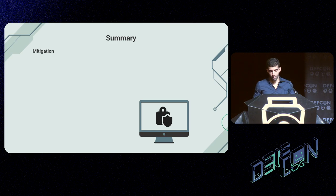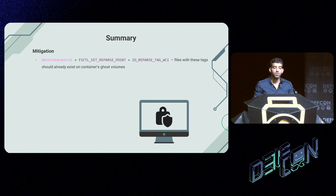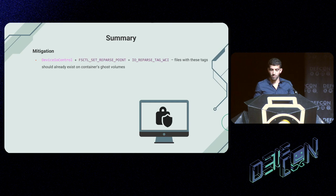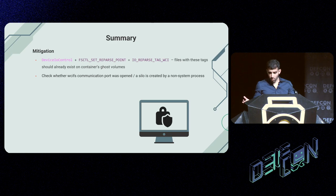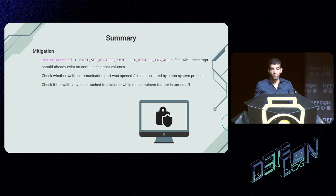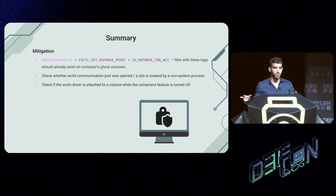So how do we mitigate these bypasses? There are numerous routes. The easiest way is detecting suspicious activity in user mode: detect calls to DeviceIoControl with the set reparse point file system control code alongside any WCI1 tags — this should not happen under normal container operation and is an anomaly. You can also check whether the WC communication port was opened or a silo was created by a non-system process, or check if the WCIFS driver is attached to a volume while the containers feature is turned off. These are just a few approaches — there are plenty of other methods, including from the kernel itself.